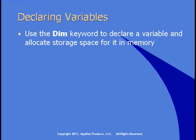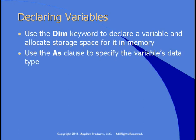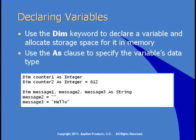To declare a variable, use the Dim keyword. The runtime then creates storage space for that variable in memory. Use the As clause to specify the data type. In the first line of code, we create a variable called counter1 and declare it as an Integer. In the second line, we create counter2, declare it as Integer, and initialize it to 612. Counter1 gets the default value for integers, which is 0, and counter2 stores 612.